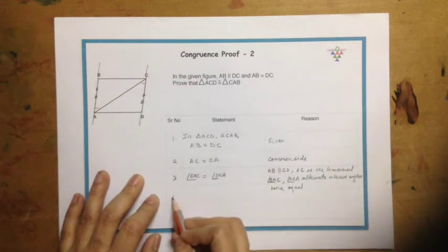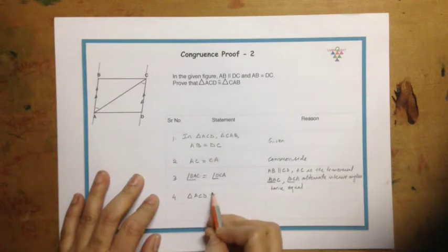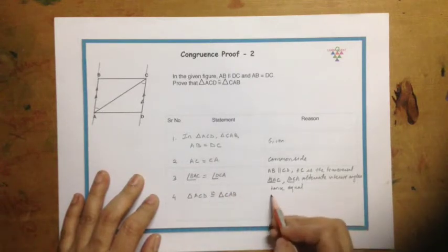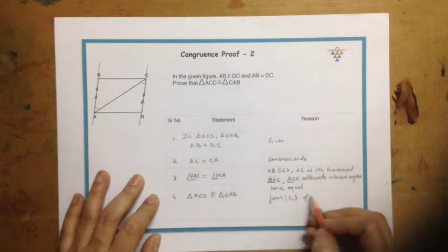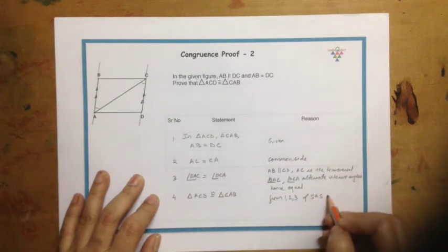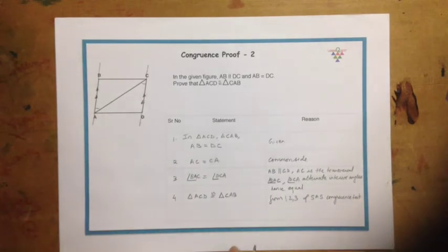So now we can say that triangle ACD is congruent to triangle CAB. Why? From statements 1, 2, and 3. And which is the test? SAS, SAS congruence test. So we have proved that these two triangles are congruent.